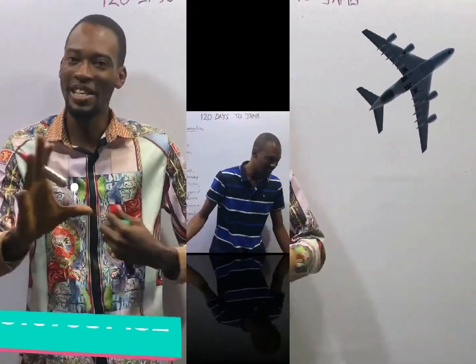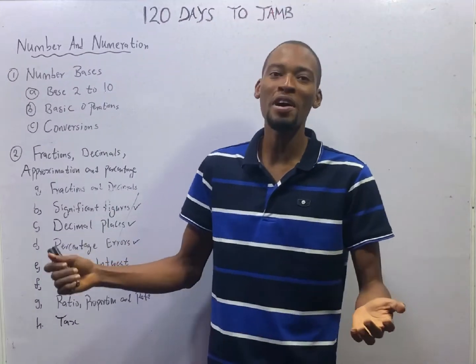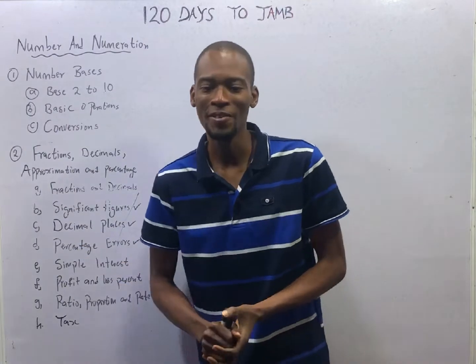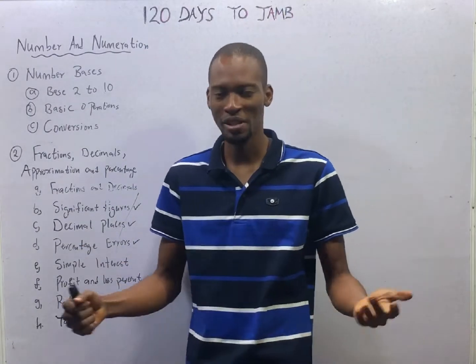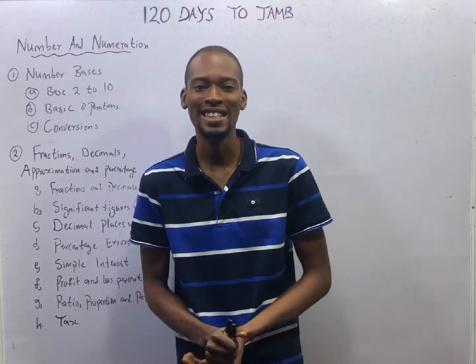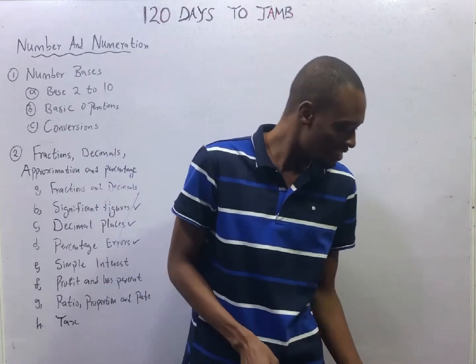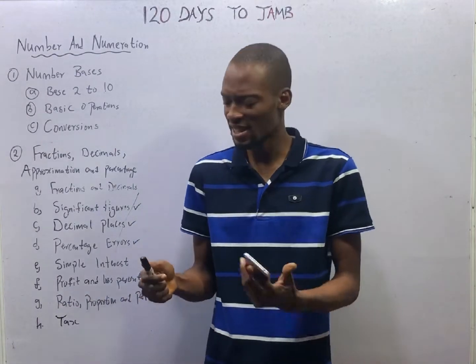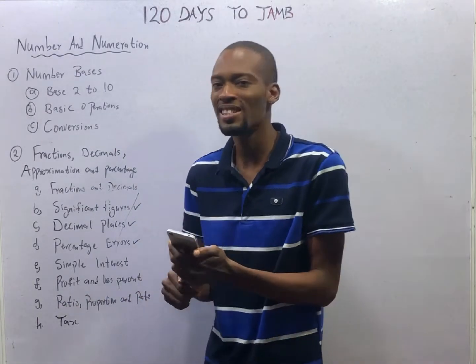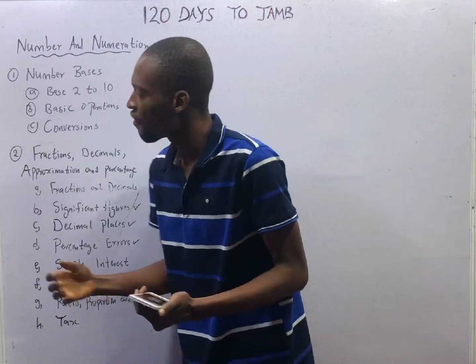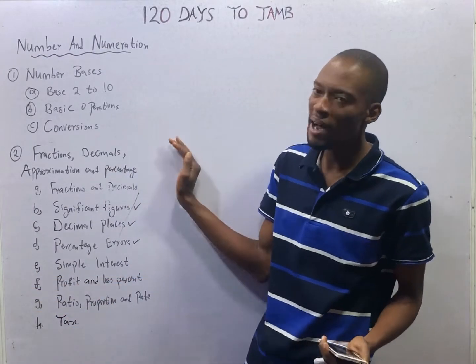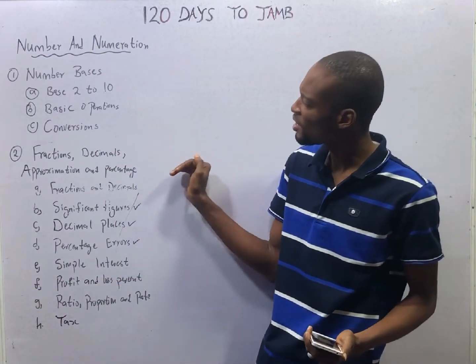Ladies and gentlemen, it is time to take off. This is episode 12 of 120 Days to Jump Mathematics with Flash Isaac. In this episode, we shall be looking at this set of questions. Remember, we are still under number and numeration.